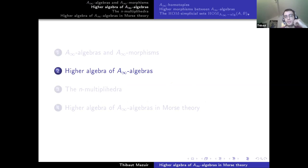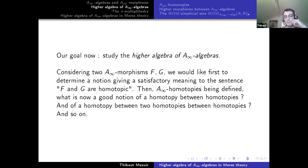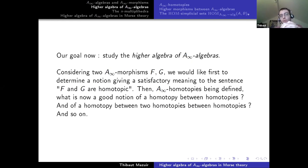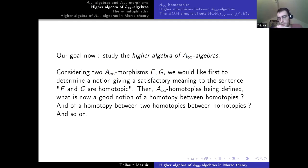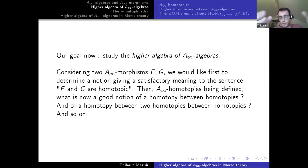What do I mean by studying the higher algebra of A-infinity algebras? The first most naive homotopic notion arising from the previous recollections is: given two A-infinity morphisms F and G between A-infinity algebras, I would like to give meaning to the sentence 'F and G are homotopic as A-infinity morphisms.' Then, now that I have defined A-infinity homotopies, what would be a good notion of a homotopy between homotopies, and a homotopy between homotopies between homotopies, and so on. Starting from a basic homotopy problem and studying all the higher coherent homotopies that arise is called studying the higher algebra of this problem.